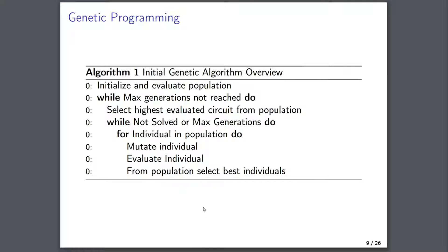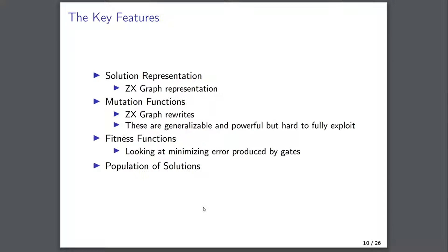Genetic programming involves a large range of areas, but we want to focus on the solution representation, the mutation, and the fitness function. To represent our solution, we use a ZX graph — a graph calculus specifically designed to represent quantum circuits. The ZX calculus has rewrite rules that can naturally take one graph and turn it into another identically functional graph with a different shape, and that's what we used for our mutation functions: rewrite rules that did not change the value of the graph but did change the structure. For our fitness function, we're trying to minimize error through gate ordering — minimizing the error produced by gates.